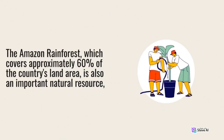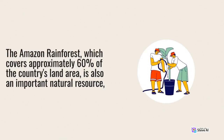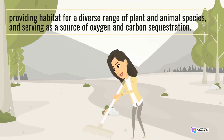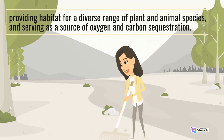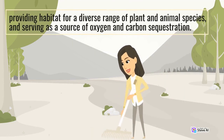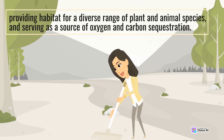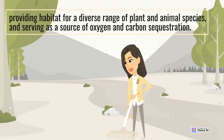The Amazon rainforest, which covers approximately 60% of the country's land area, is also an important natural resource, providing habitat for a diverse range of plant and animal species, and serving as a source of oxygen and carbon sequestration.